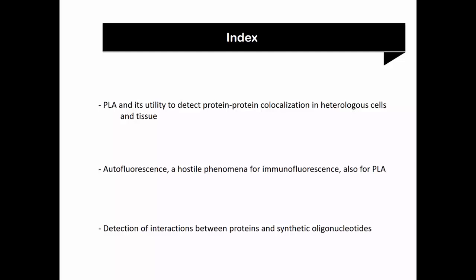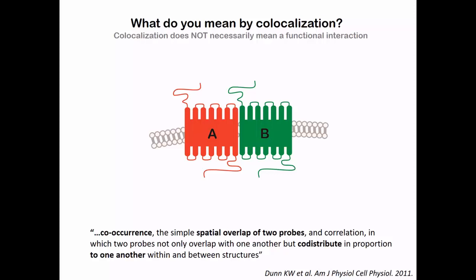First I will talk about co-localization and how we can reduce it. And finally I will talk a little bit about how to use PLA in epigenetics. So first, what do we mean by co-localization? Co-localization means co-occurrence — the spatial overlap of two probes, for the co-distribution of one protein into another in the sample of interest.